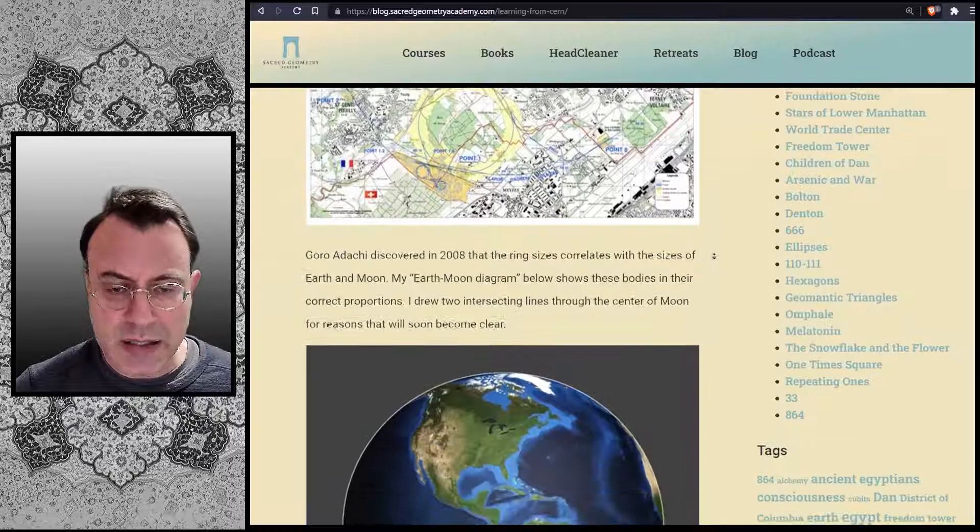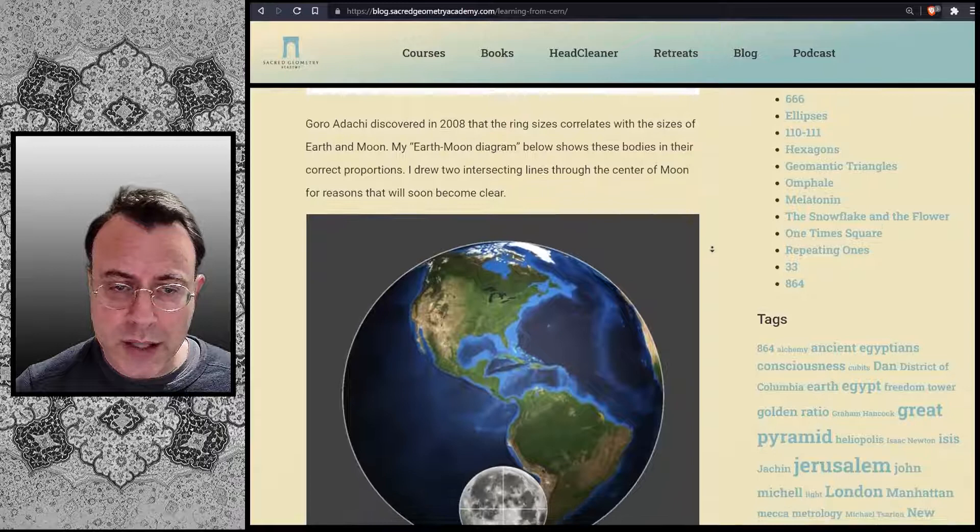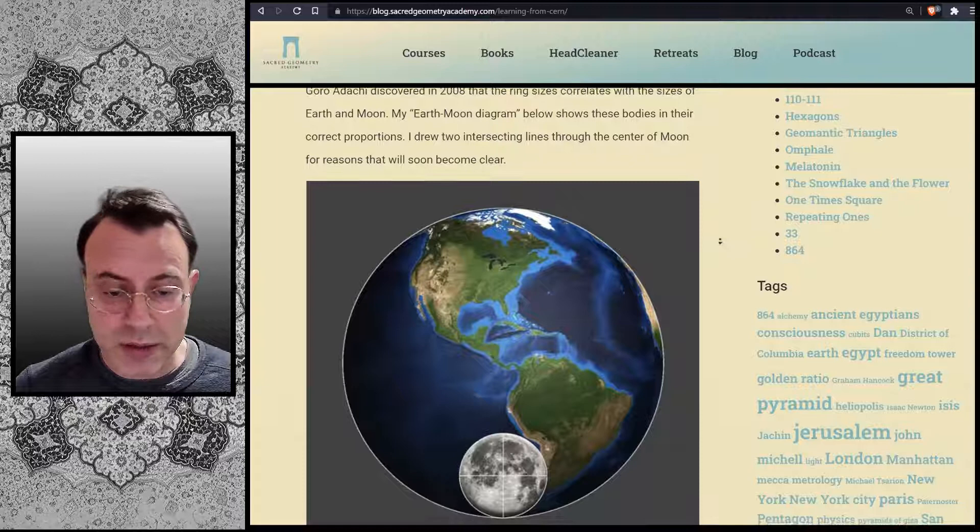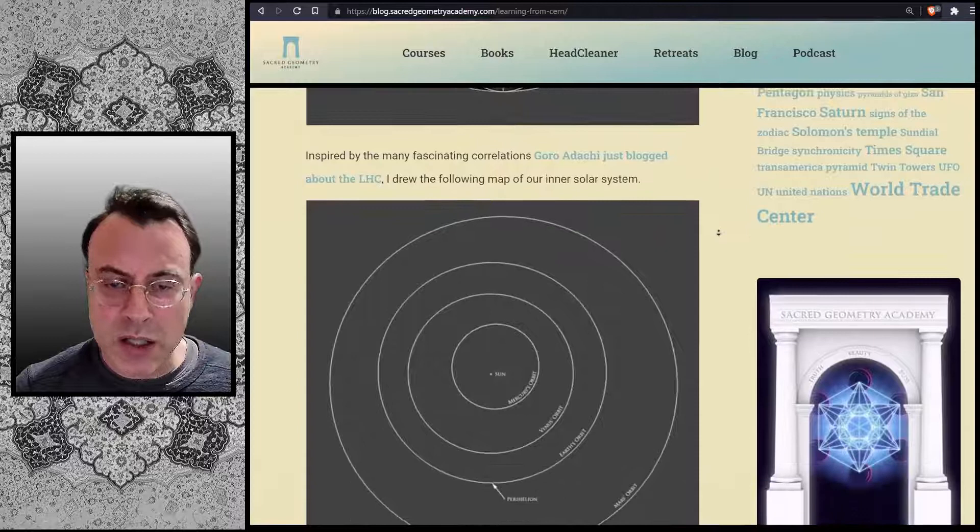Goro Adachi discovered in 2008 that the ring sizes correlate with the sizes of Earth and Moon. My Earth-Moon diagram below shows these bodies in their correct proportions. I drew two intersecting lines through the center of the Moon, for reasons that will soon become clear. Inspired by the many fascinating correlations Goro Adachi just blogged about the LHC, I drew the following map of our inner solar system.